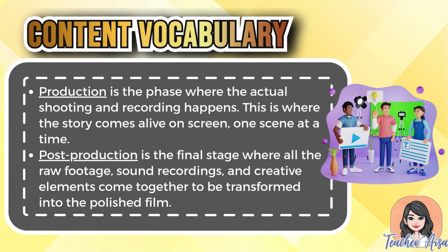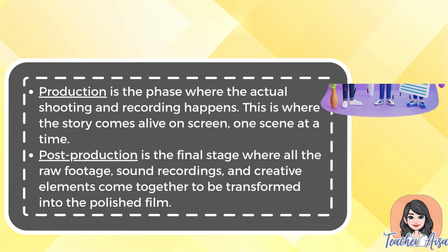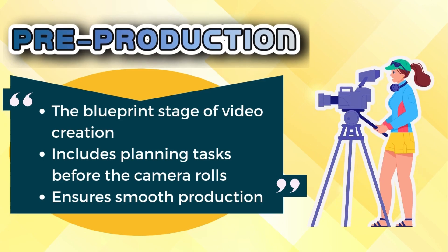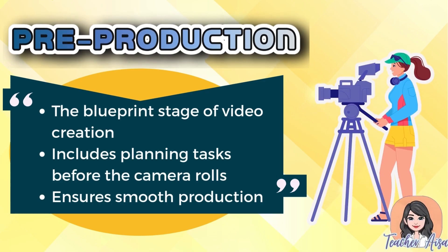Production is the phase where the actual shooting and recording happens — this is where the story comes alive on screen, one scene at a time. Post-production is the final stage where all the raw footage, sound recordings, and creative elements come together to be transformed into the polished film.